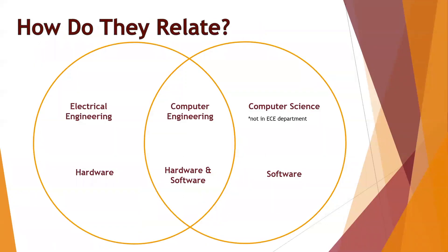This Venn diagram shows the difference between our majors and computer science, which is not in our department. Electrical engineering is purely the hardware, computer science would be more so software, and computer engineering is that bridge between the two — combining hardware and software in your projects. They're really the bridge between both fields in industry.